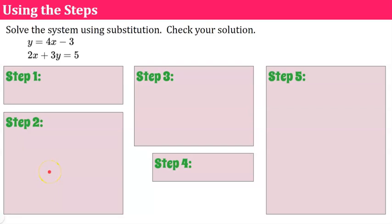So here's how we use those steps. Our instructions are: solve the system using substitution and check your solution. A system of linear equations is two or more linear equations, and we're looking to find the point where they intersect on a coordinate plane. Graphing is usually used to estimate unless the intersection is at integer values, so today you'll see ordered pairs that aren't just integers.